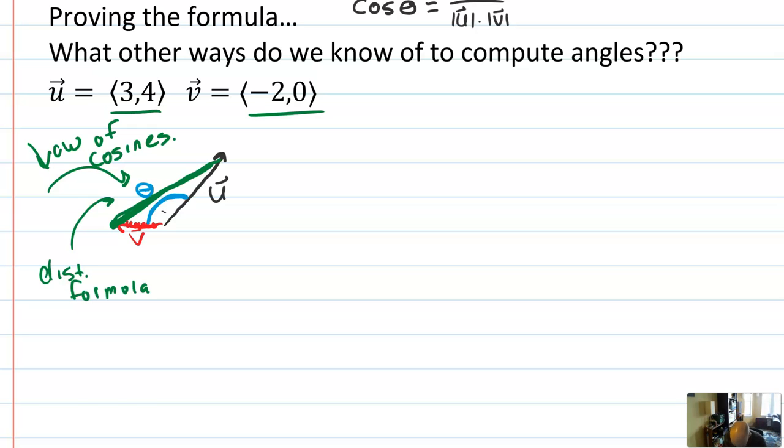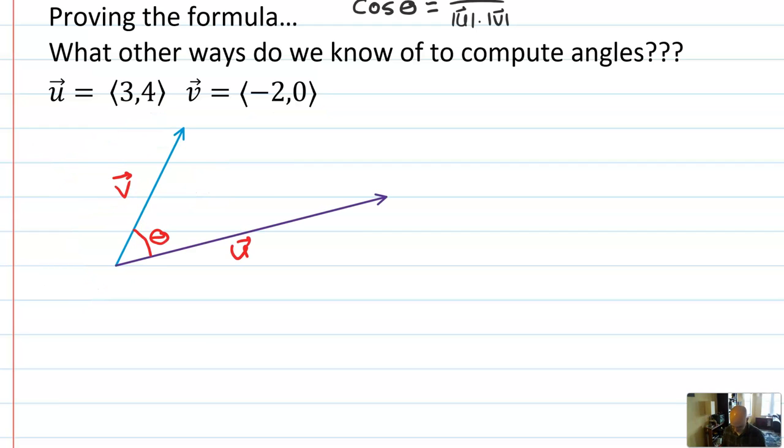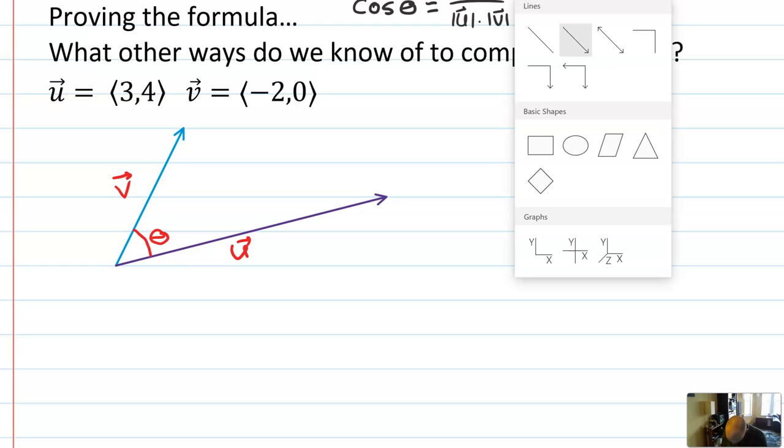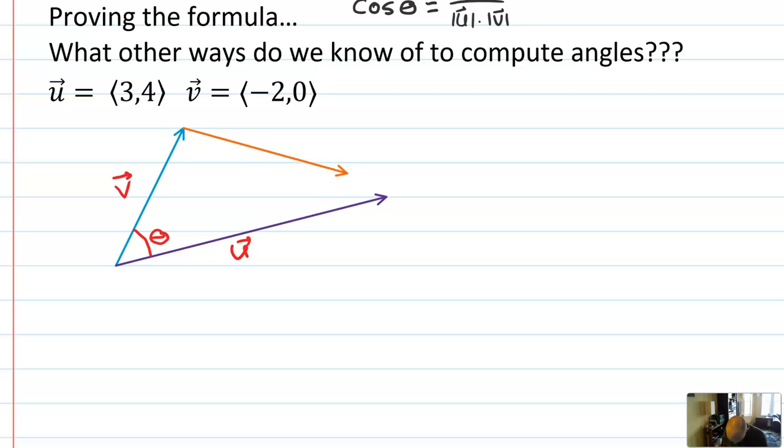For example, to find theta, we could find the length of this using the distance formula and then find theta using just regular old law of cosines because this is a triangle. This would work for these two vectors right here, but it's actually going to work for any vectors a and b. The first step is drawing out two vectors, and I am again just doing nothing, pretending I know nothing about their coordinates at all.